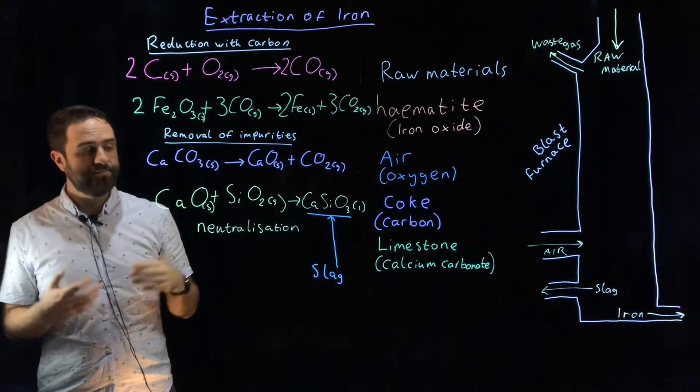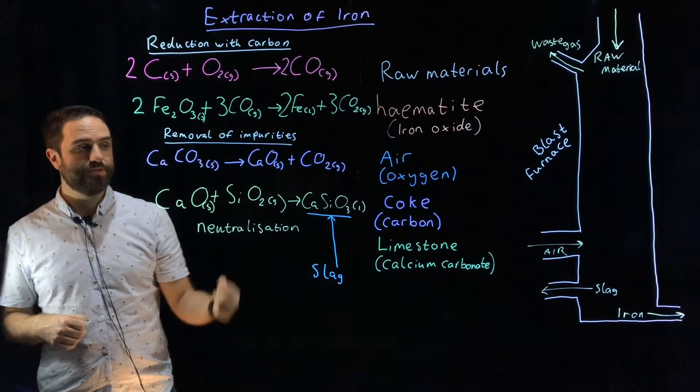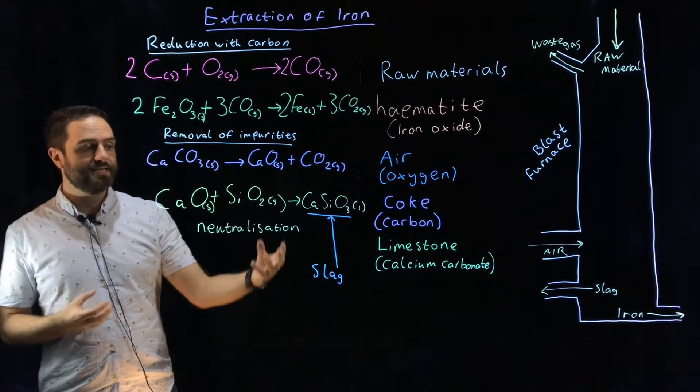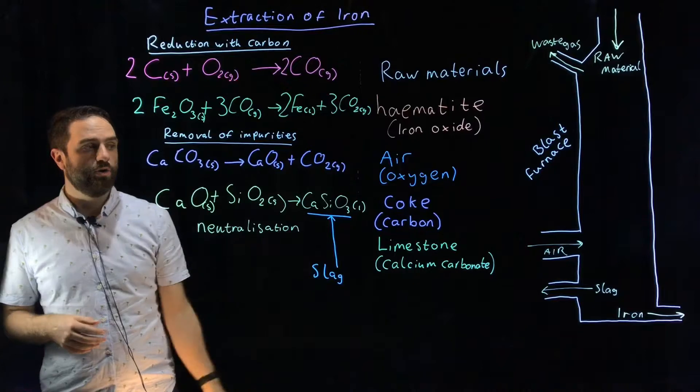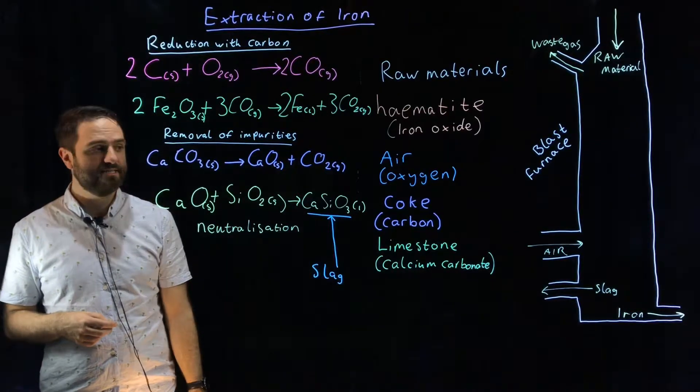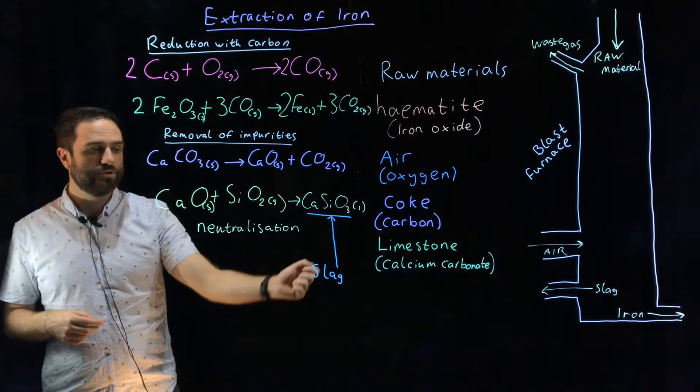The calcium oxide is left over and at these high temperatures it reacts with the silicon dioxide to make this glassy low-density substance called calcium silicate, CaSiO3, also known as slag.